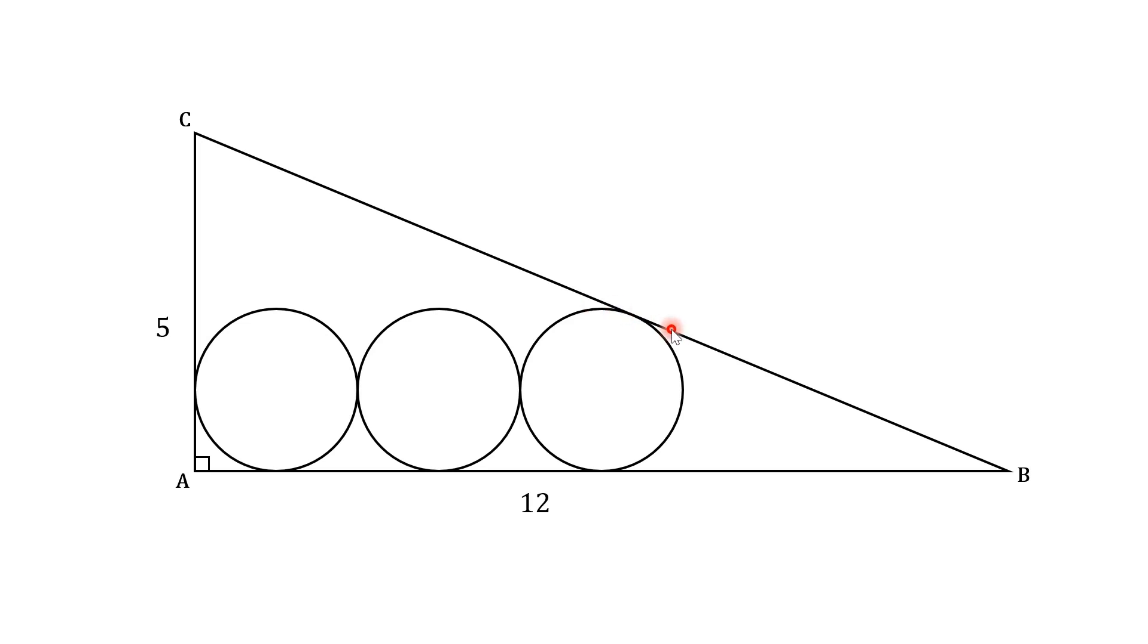So what do we need to calculate in order to solve this problem? Well in order to find the area of a circle we need its radius. So the first thing we can do is locate the centers of the circles and construct radial lines.